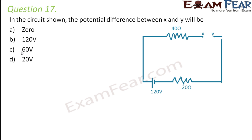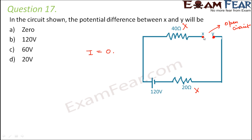Question number 17: in the circuit shown, the potential difference between X and Y will be. This is an open circuit, so there is no current flow. With no current, there is no voltage drop across the 40 ohm or 20 ohm resistors, meaning the potential difference between the two points equals the EMF of the cell, which is 120 volts.